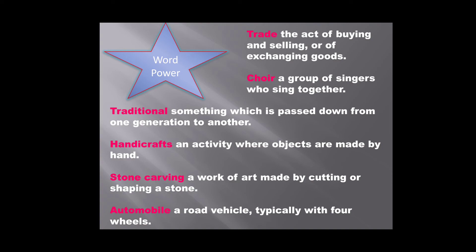Some difficult words from the chapter: Trade — the act of buying and selling or exchanging goods. Choir — a group of singers who sing together. Traditional — something passed down from one generation to another. Handicrafts — an activity where objects are made by hand. Stone carving — a work of art made by cutting or shaping a stone. Automobile — a road vehicle typically with four wheels.